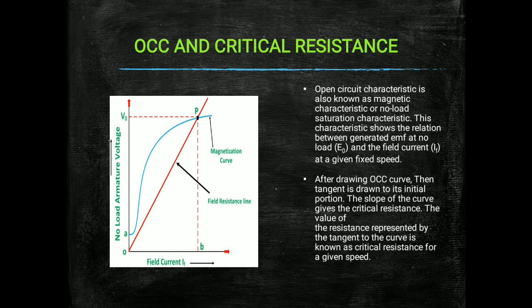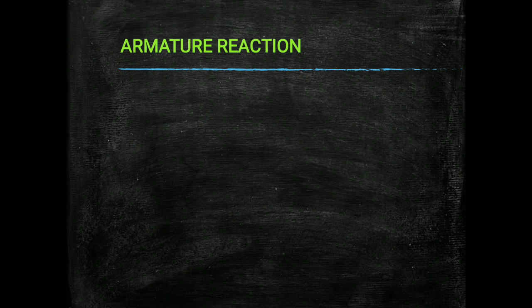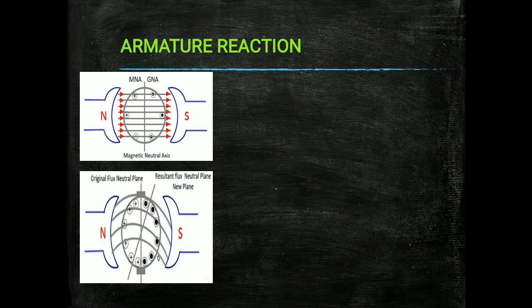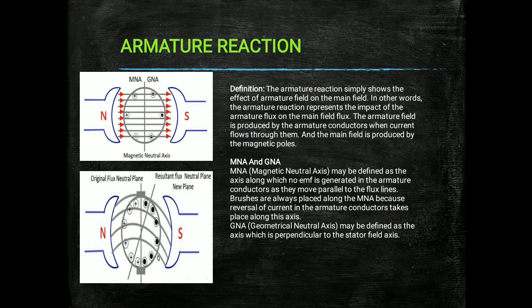The next slide is armature reaction. What is armature reaction? Armature reaction is the reaction between two magnetic fluxes: one is the armature flux and the other is the main flux between the north and south poles. Armature reaction simply shows the effect of the armature field on the main field.